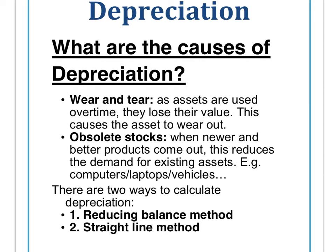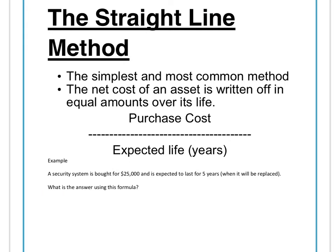The two methods we're going to look at today are the reducing balance method and the straight line method. The straight line method is the simplest and most common method used in accounting by business owners.